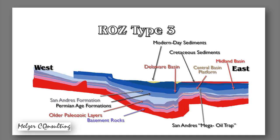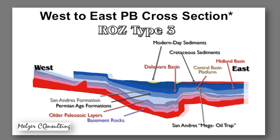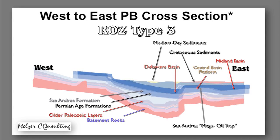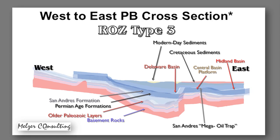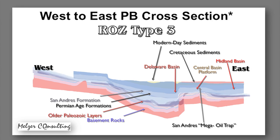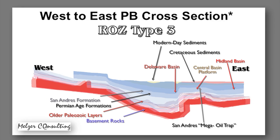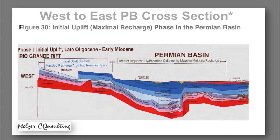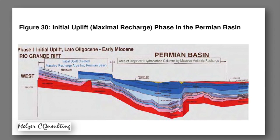What we've got is a cross-section that we have adopted here in the Permian Basin. This would be a west to east cross-section showing the layers of geology that run all the way from the modern-day sediments through the Cretaceous down to the Permian, for which the Basin is named, and down into the older Paleozoics of the Basin. We've got over 200,000 wells that have penetrated this geology, so we know it very well.